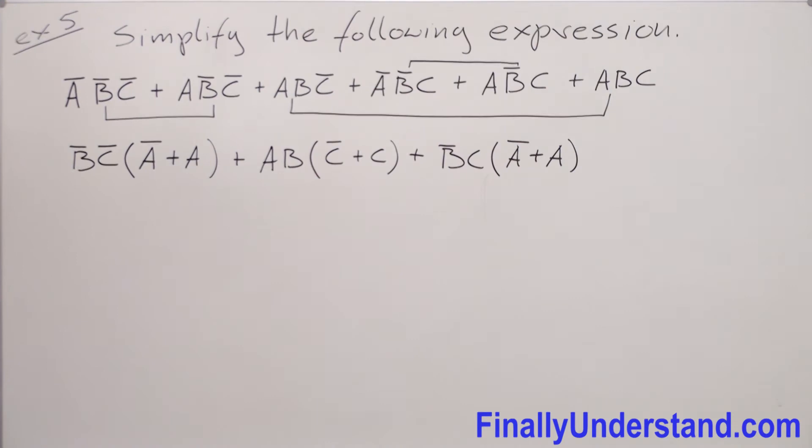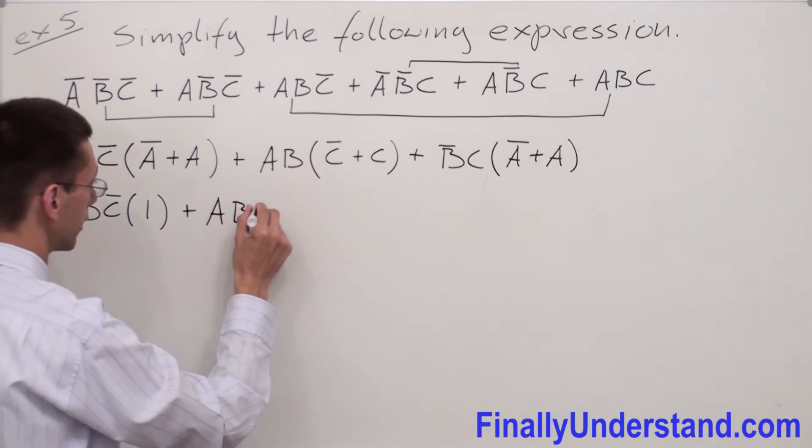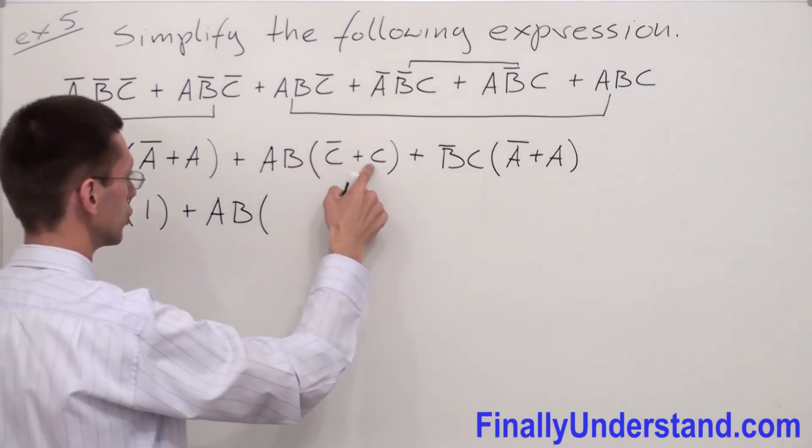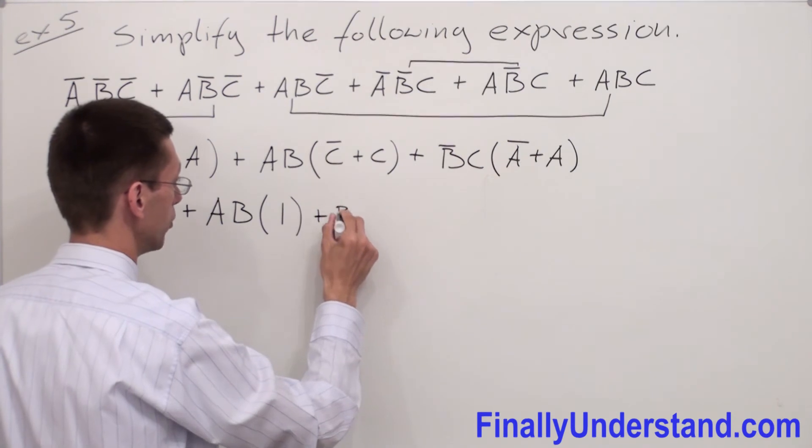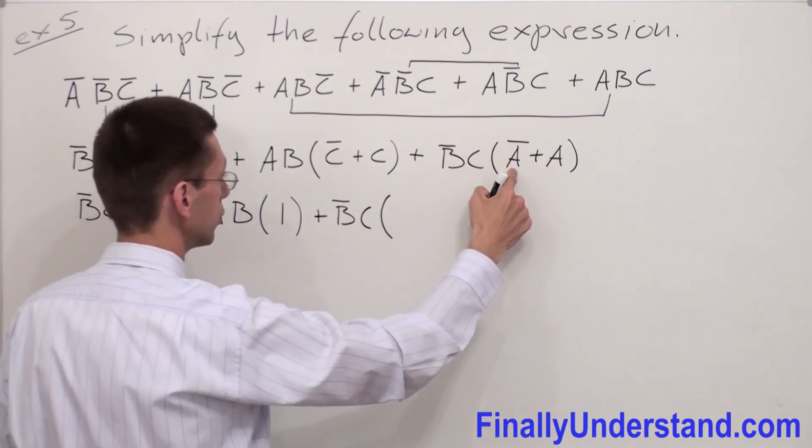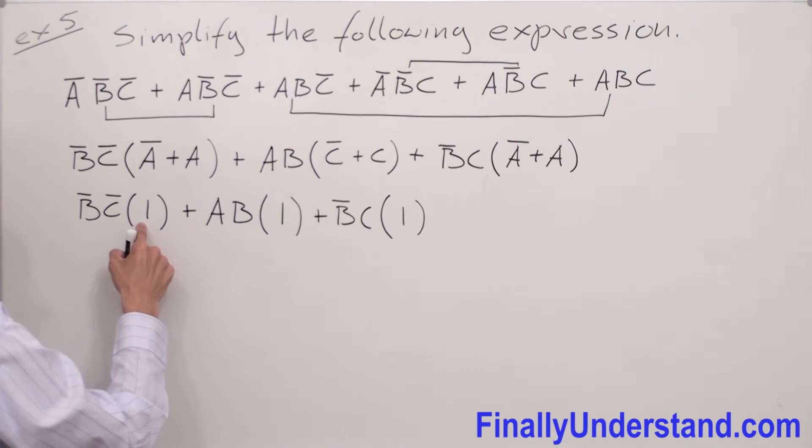Now, remember that any time we have complements all together, this is going to give me always 1. So I'm going to have B̄C̄ times 1. Remember Ā or A will give me always 1, plus B̄C̄ plus B̄C. And I have Ā or A gives me always 1.